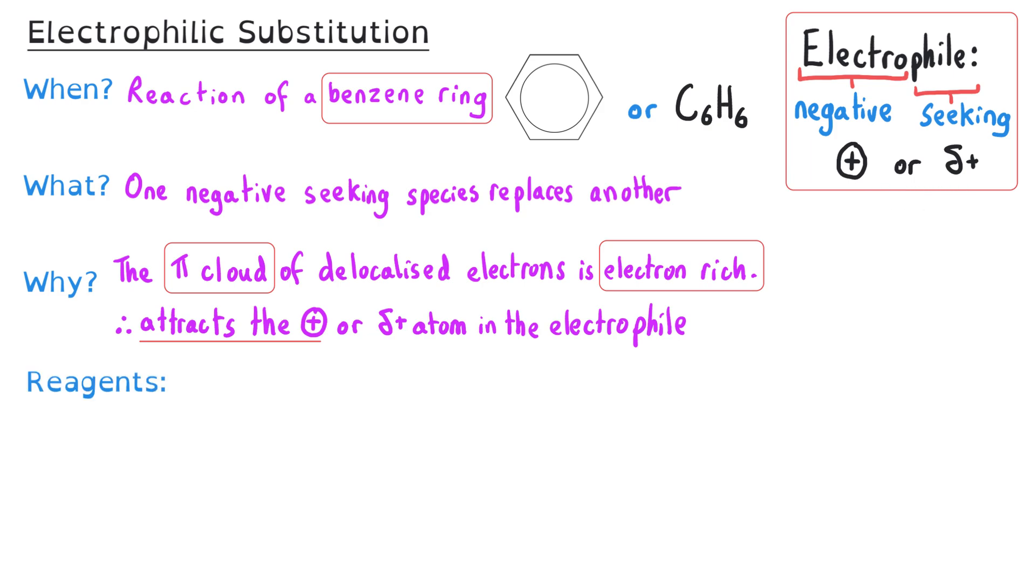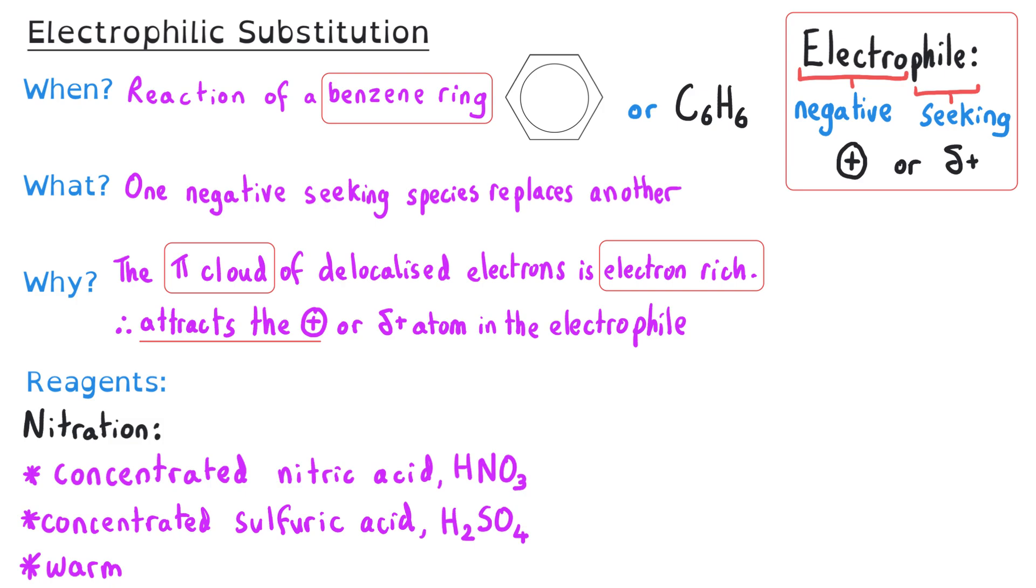There are two types of electrophilic substitution mechanism that you need to know about. There is nitration, which involves concentrated nitric acid, HNO3, as our source of our electrophile, and it involves a concentrated sulfuric acid catalyst.